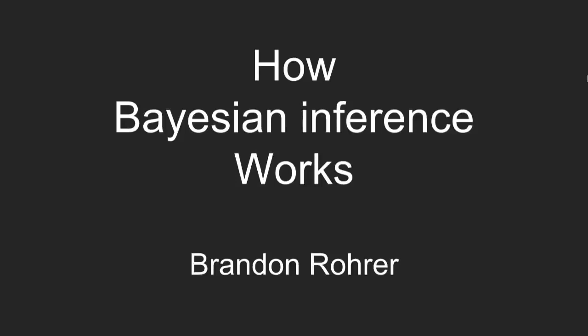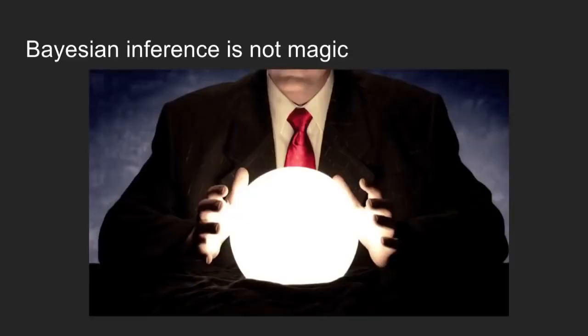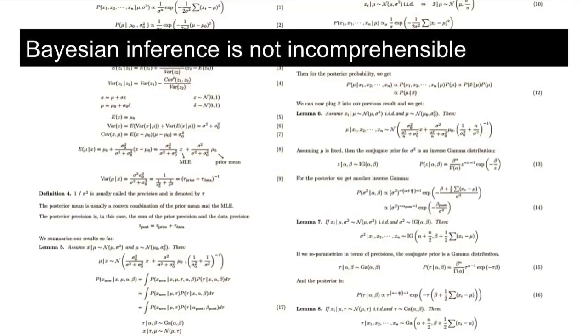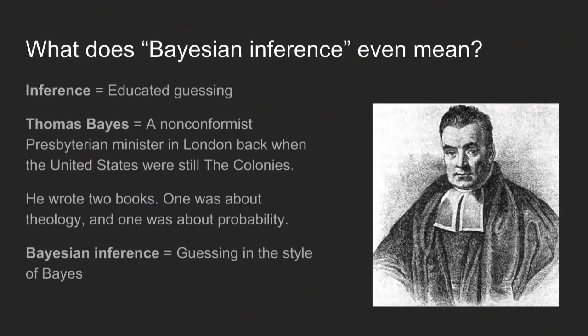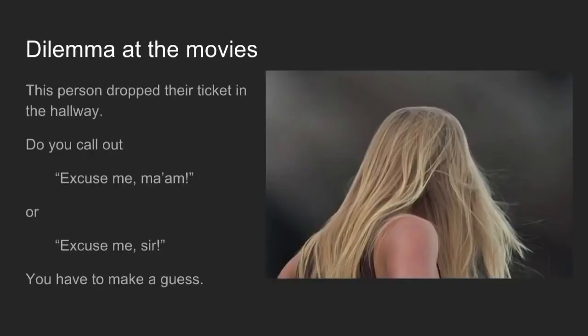Bayesian inference is a way to make guesses about what your data mean based on, sometimes, very little data. The way it works is tricky, but it's not magic. It's definitely something that you can wrap your head around. My goal is that by the time we're done talking, you'll have a pretty crisp picture of how it works. Bayesian inference is just guessing in the style of Thomas Bayes, who was a nonconformist Presbyterian minister. He wrote a couple of books — one about religion and one about probability.